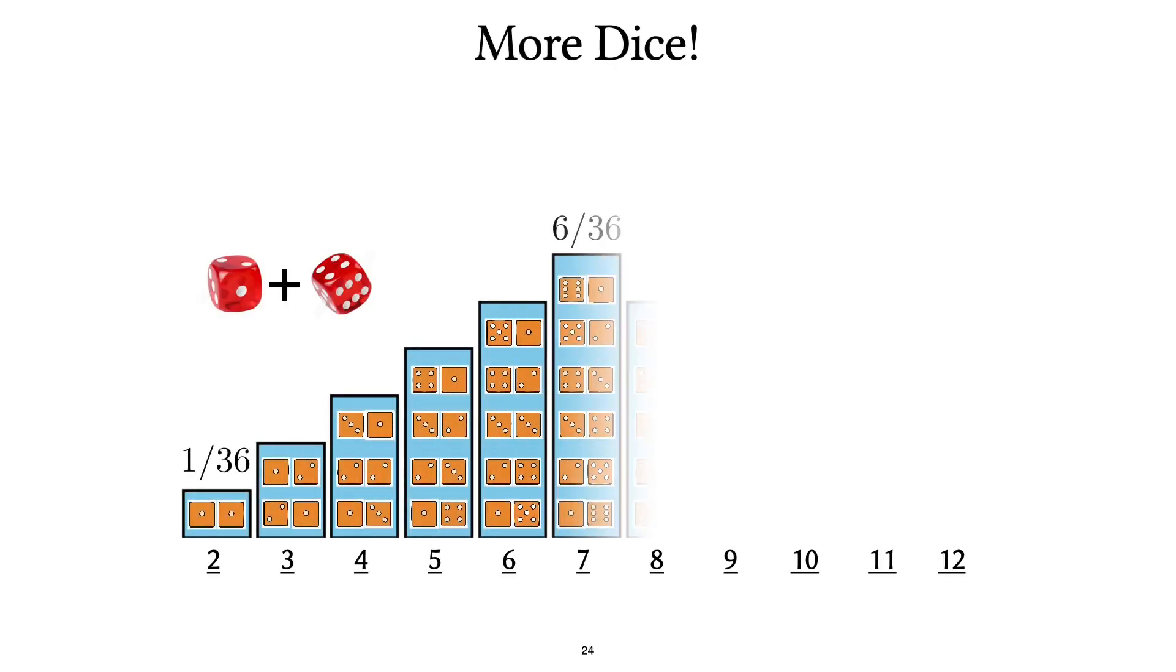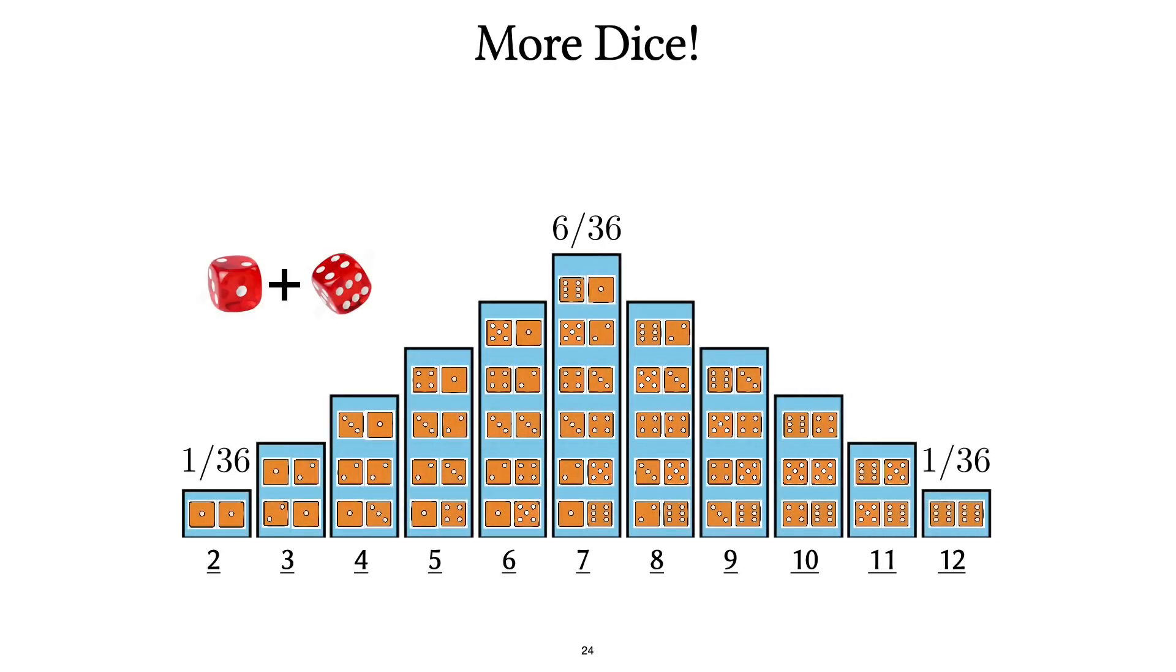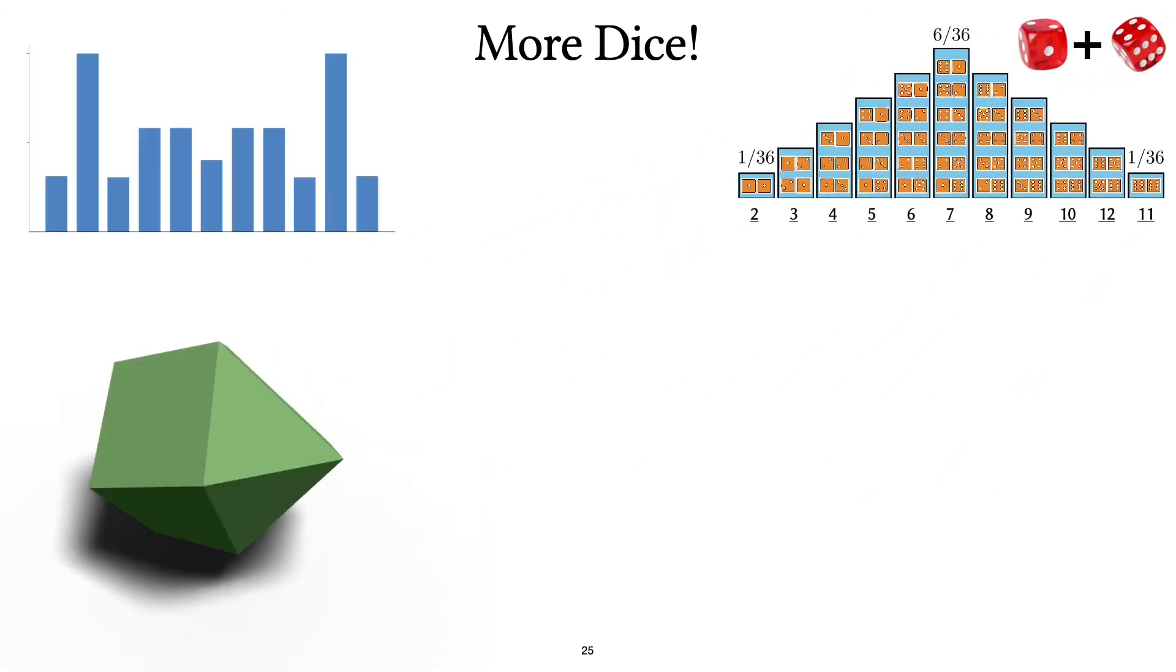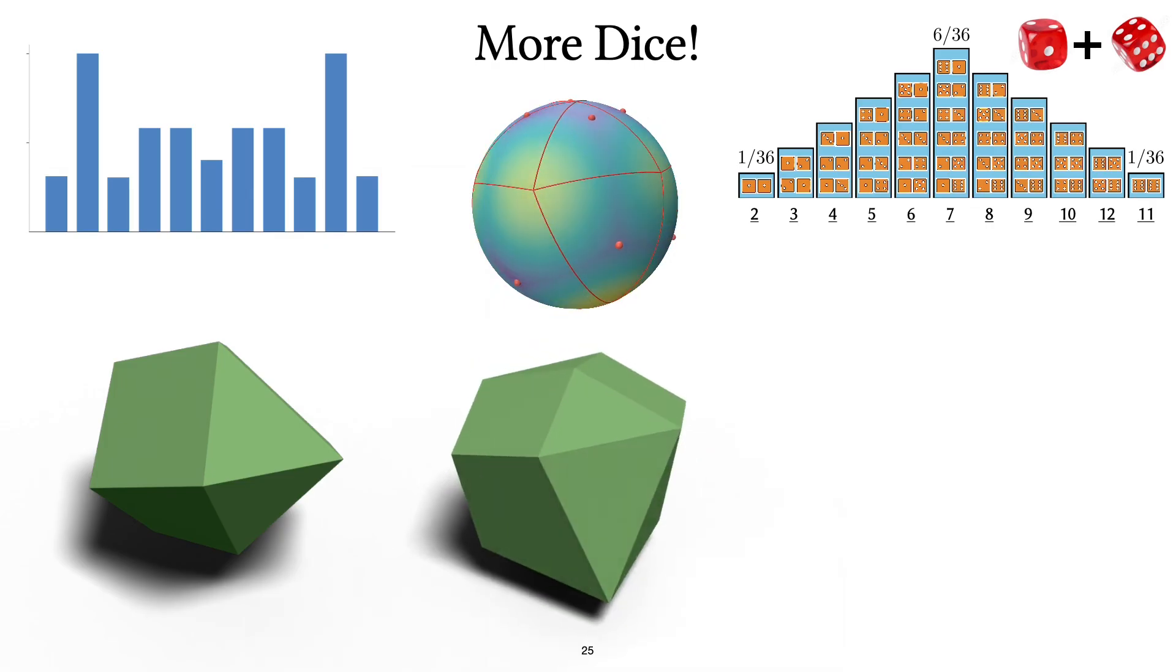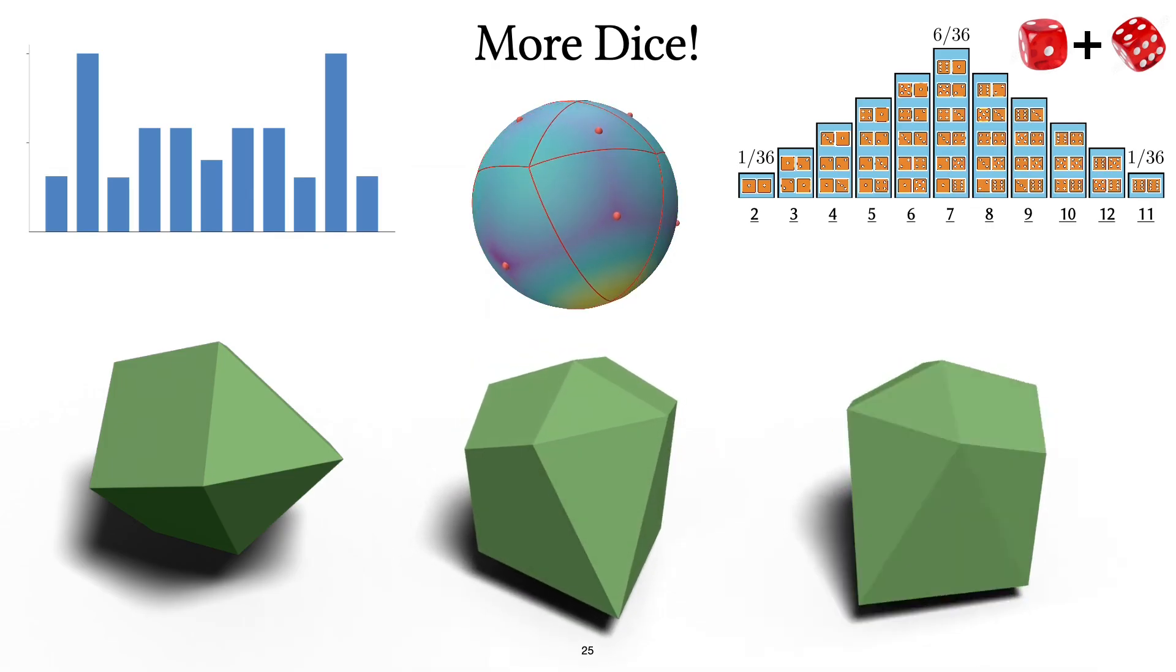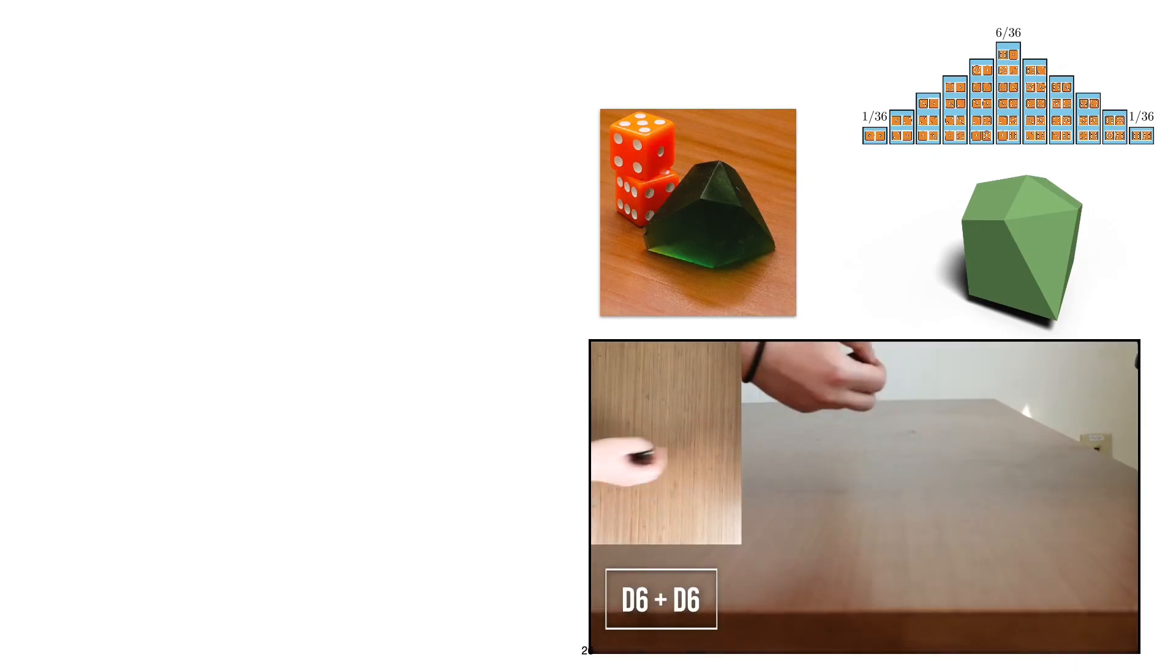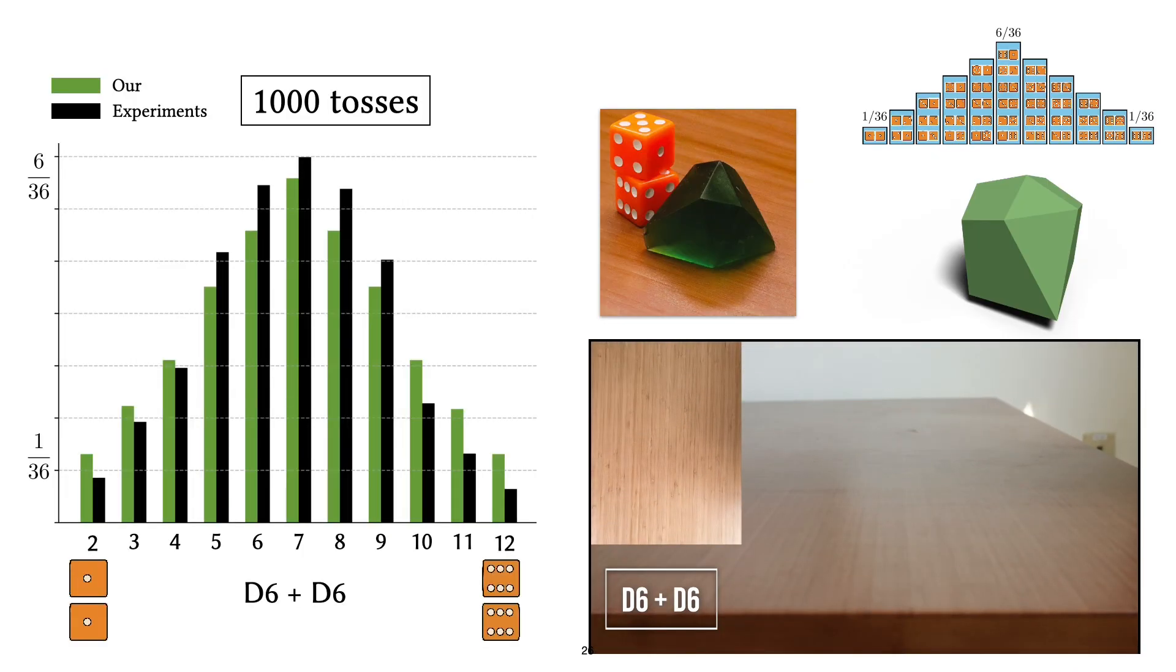Here's another example where we aim to design a shape that simulates two dice rolls. We start with a shape that has 11 stable sides with this distribution and after optimizing it, we end up with a shape that has the probabilities that we want. We also 3D print this shape and we do experiments with it, this time by doing a thousand tosses. Again, we see that experiments and our estimates are a decent match.